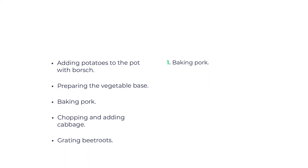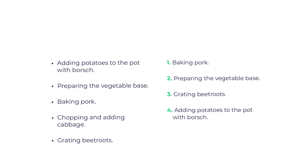The correct order is: 1. Baking pork. 2. Preparing the vegetable base. 3. Grating beetroots. 4. Adding potatoes to the pot with borscht. 5. Chopping and adding cabbage.